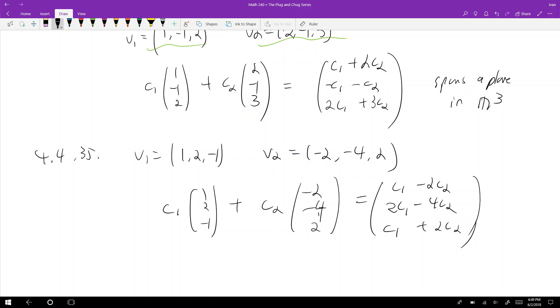However, you're going to notice something. You're going to notice that what happens if c1 equals negative 2c2? Then you get that these two are the same thing, right? So if I choose my scalars wisely, I end up with the same vector.